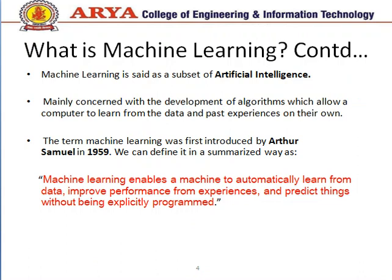Machine learning is mainly concerned with the development of algorithms which allow a computer to learn from data and past experiences on its own. It was introduced by Arthur Samuel in 1959. Technically, machine learning enables a machine to automatically learn from data, improve performance from experiences, and predict things without being explicitly programmed — meaning there is no need to program it again and again; it behaves on the basis of previous experiences and results.